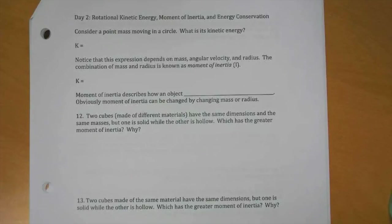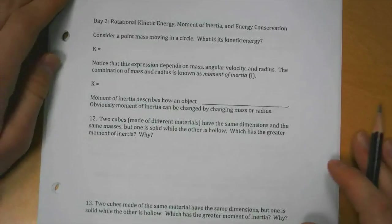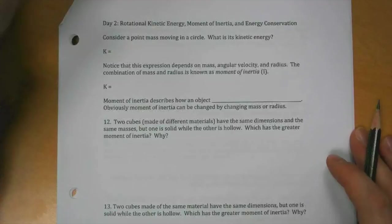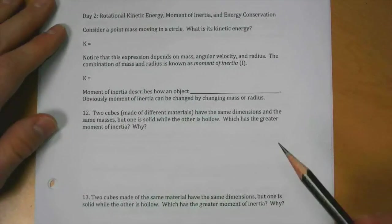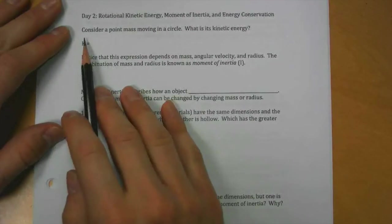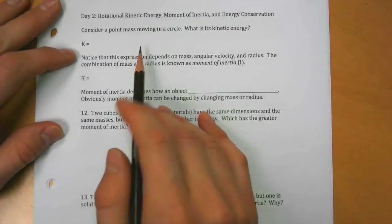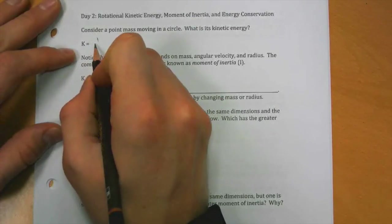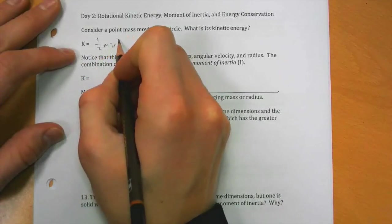So I mentioned that we're going to go through each of our topics that we've done so far in physics and look at them from a rotational perspective. Let's consider kinetic energy of a point mass moving in a circle. We know kinetic energy is one-half mV squared.